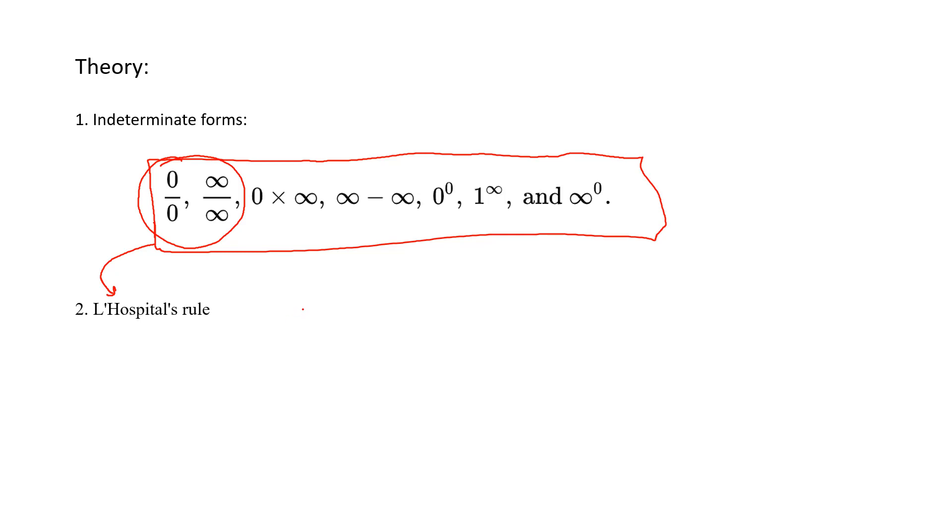L'Hôpital's rule simply states that if you have a function f such that limit x tending to zero of f equals limit x tending to zero of g of x equals zero, and also the derivative g prime of x exists and g prime of x is not equal to zero, then...